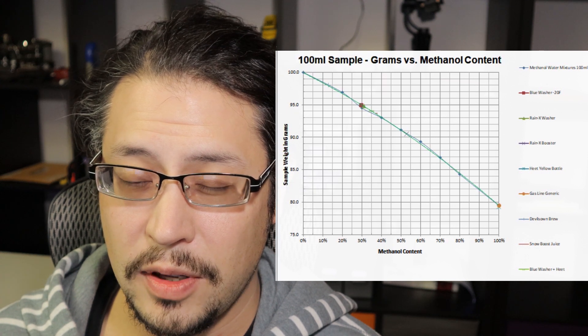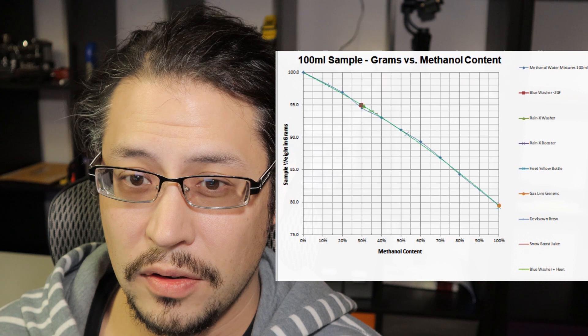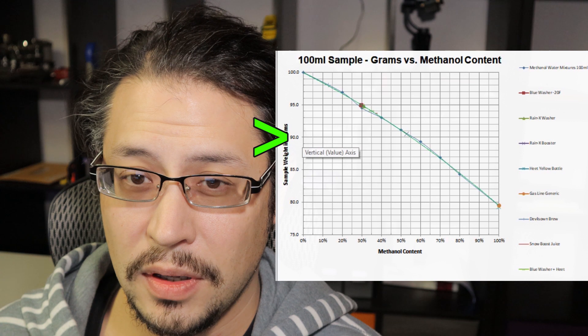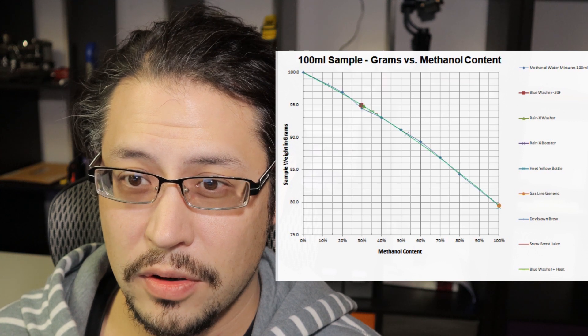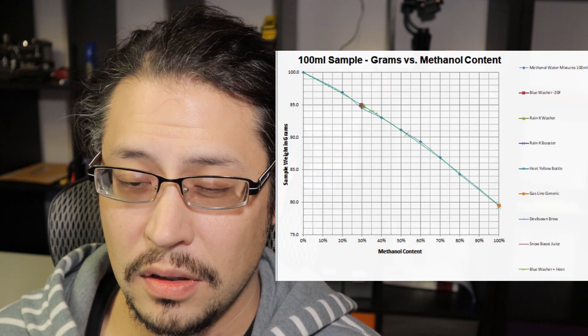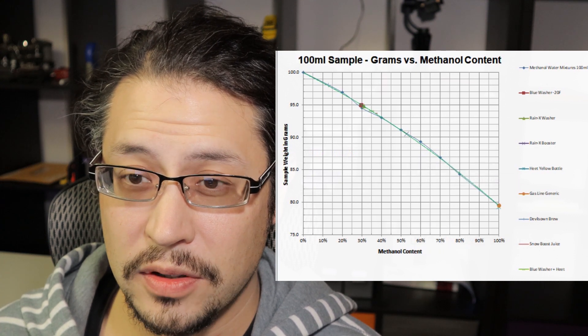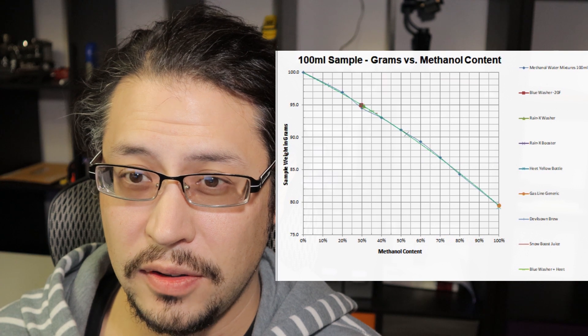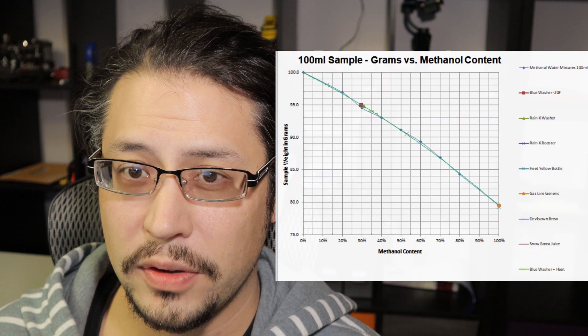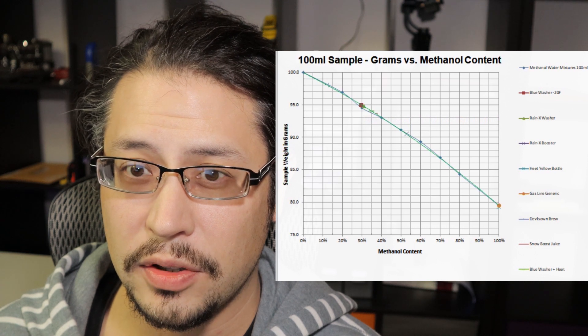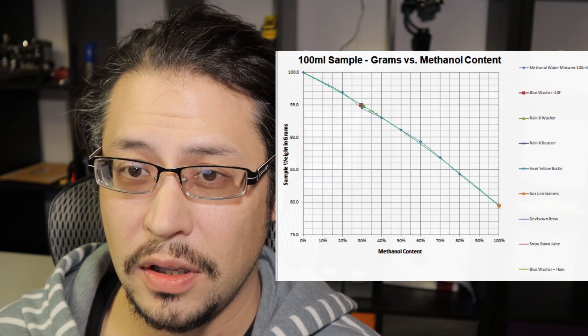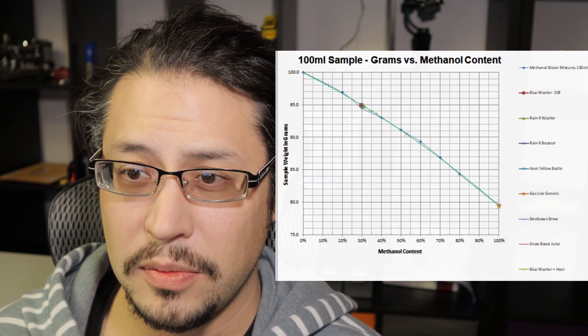Here is the sample weight in grams. Whatever sample weight you get, let's say you measure 90 grams on your mystery sample, go to 90, follow all the way across, it crosses this line, come down, here's your methanol content, 55% right there. This is an inexpensive way to do it. The single blue line is when I characterized it with the VP fuels to give us a very accurate characterization of this curve.